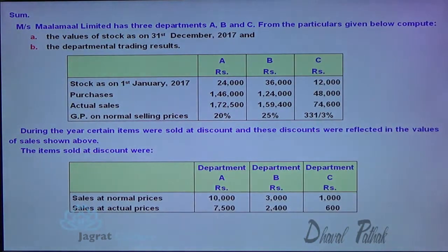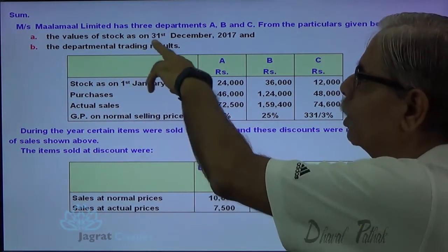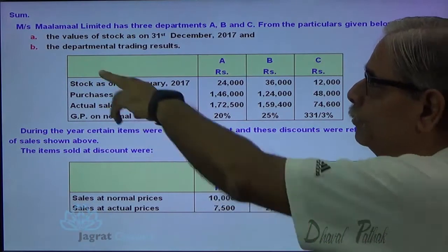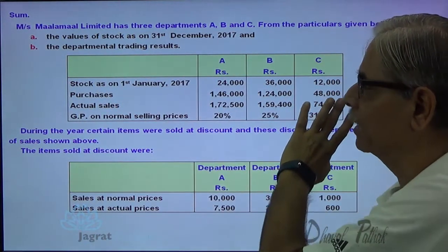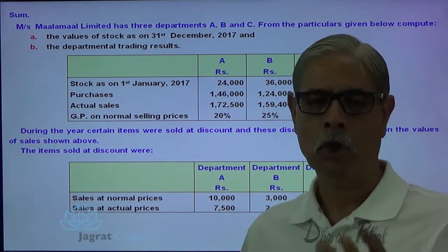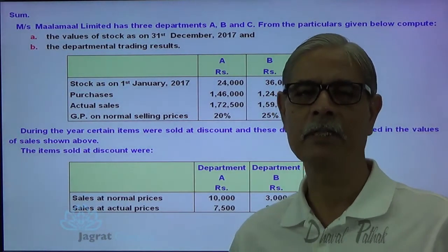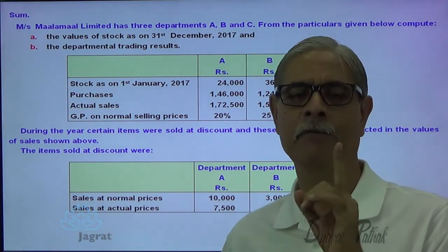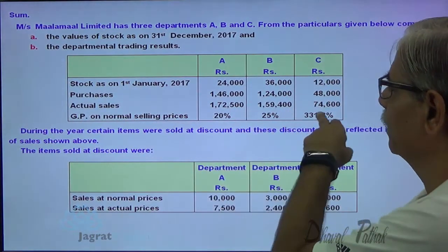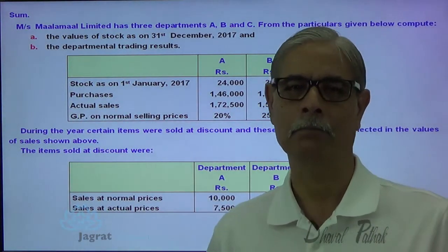Malawal Limited has three departments A, B, and C. From the particulars given, compute the value of stock on 31st December 2017. The departmental trading results are also to be worked out, so the gross profit of each department is to be worked out and we are required to find out the closing stock, because we are given the percentage of profit for each department.